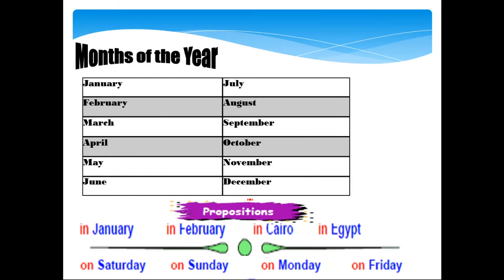Another preposition we use is 'on' with weekdays. We can say 'on Saturday,' 'on Monday,' 'on Wednesday,' and so on. We use 'in' for months and for big places like 'in Cairo' or 'in Gaza,' and we use 'on' for days.